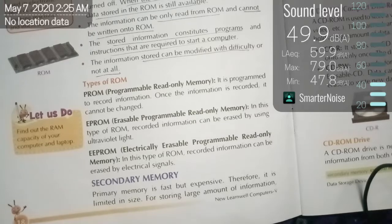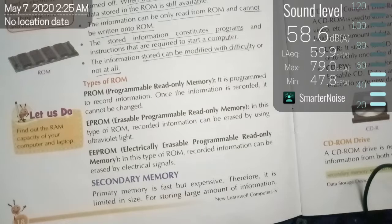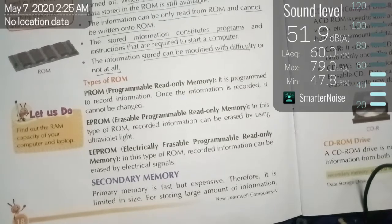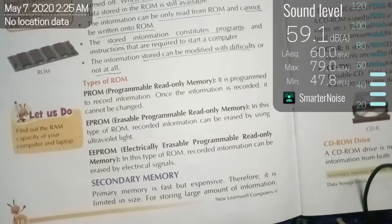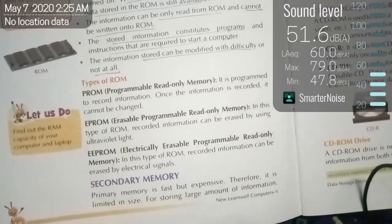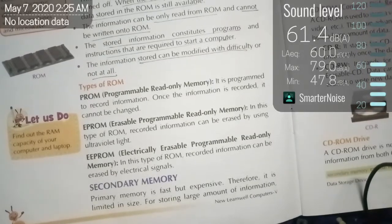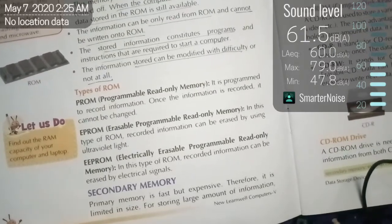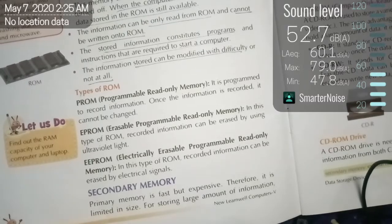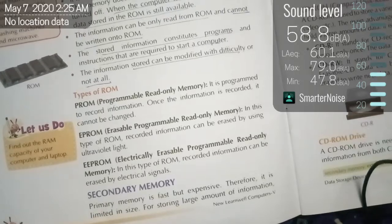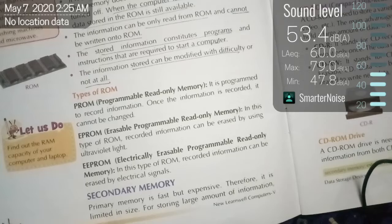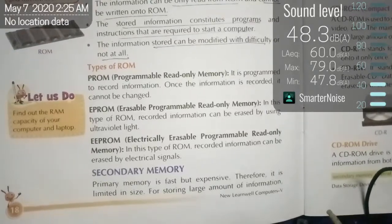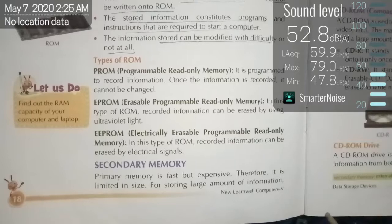The second type is EPROM — Erasable Programmable Read-Only Memory. In this type of ROM, recorded information can be erased by using ultraviolet light. Ultraviolet light means sun rays — with the help of sun rays you can erase the data and again you can reuse this ROM. That covers our types of ROM. Now let us learn about secondary memory.